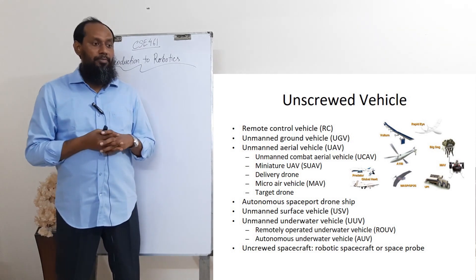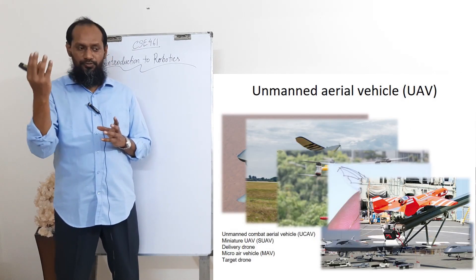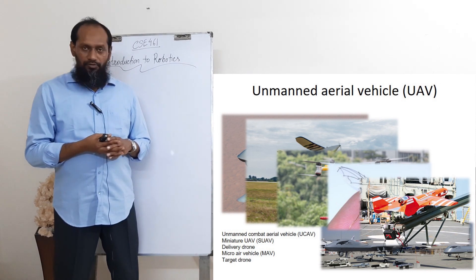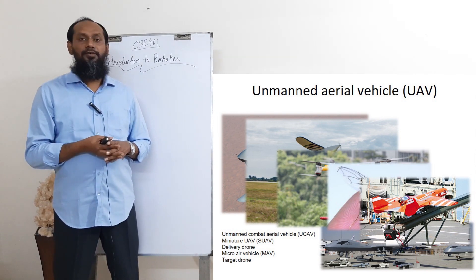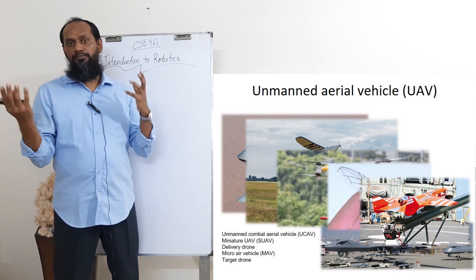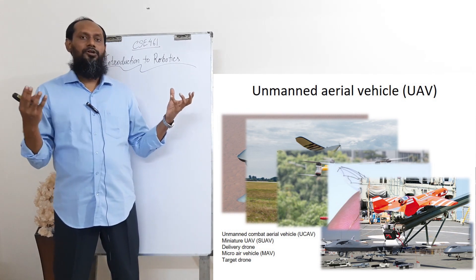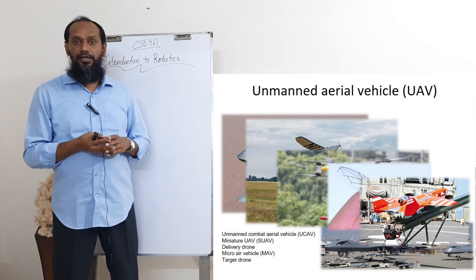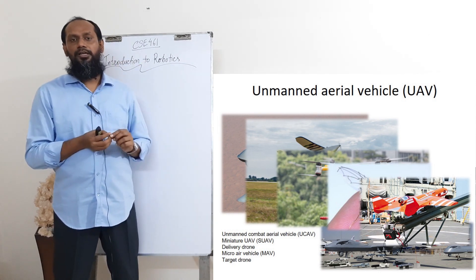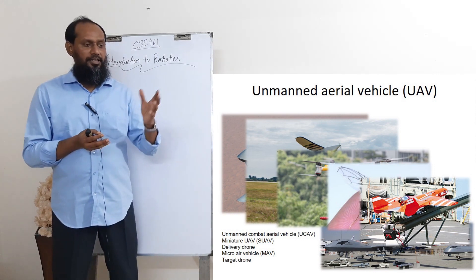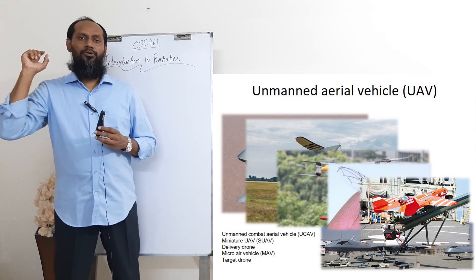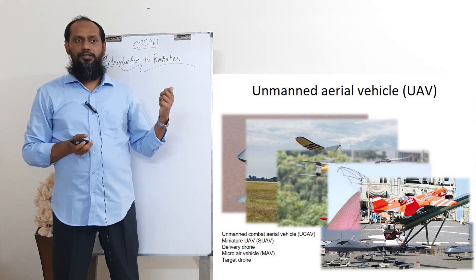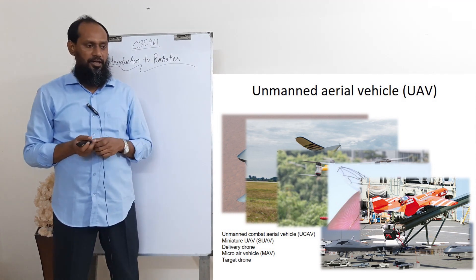One is unmanned combat aerial vehicle, that means the vehicle used for military purposes. Then miniature UAV — small size UAV. Then delivery drone: you can hear from the market, like Amazon and DHL, they are trying to introduce drones for delivering their items. And of course, micro air vehicle, which is a very, very small size aerial vehicle. And then the target drone — you can send a drone and it will hit a target or arrive at a specific target. They usually use this kind of drone for target ammunition.